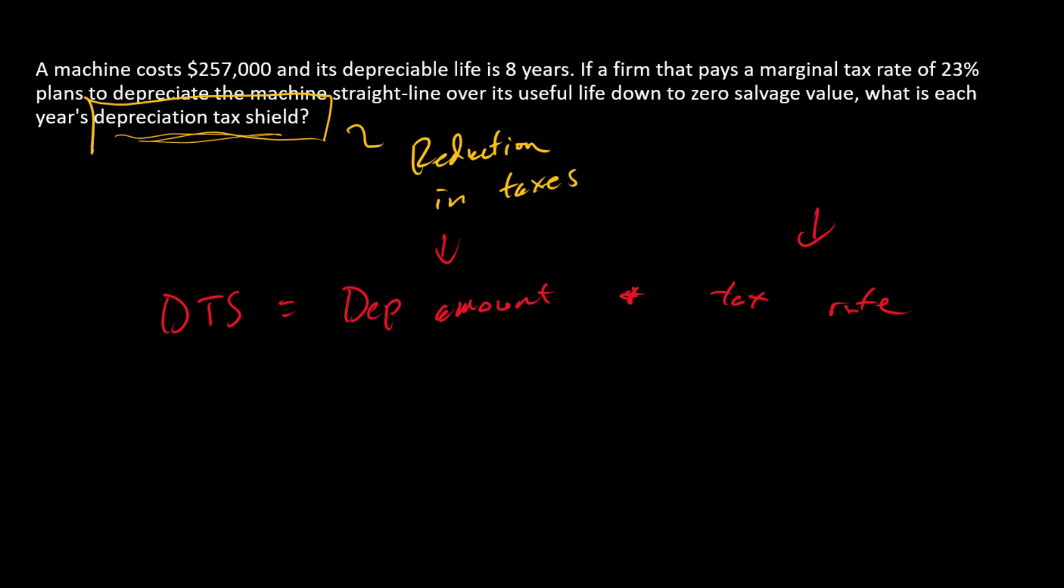First of all, let's talk about the depreciation amount. We're going to go from $275,000 all the way down to zero. This is the full amount of depreciation over eight years. Each year, we're going to divide that number by eight and we'll have the depreciation amount.